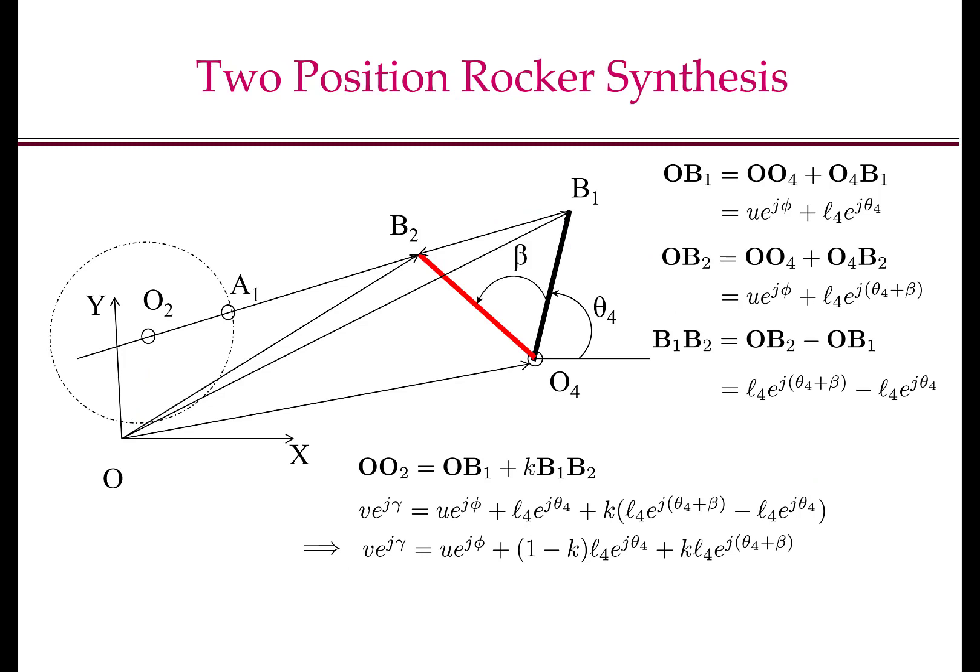To see that, let us dive into a few more details. As I said, OB1 is OO4 plus O4B1. So the length of OO4 is U and the angle that OO4 makes with the x-axis is phi. I apologize for the change in notation. In the previous slide, I said this length is R, but that should not really matter here. So OO4 equals to U e to the power of j-phi. Therefore, OB1 is OO4 plus O4B1 is U e to the power of j-phi plus L4 e to the power of j-theta-4. Recall that L4 is the length of the rocker. OB2 is similarly OO4 plus O4B2, which is U e to the power of j-phi plus L4 e to the power of j-theta-4 plus beta. And B1, B2 is OB2 minus OB1. These two terms will cancel and we have L4 e to the power of j-theta-4 plus beta minus L4 e to the power of j-theta-4.